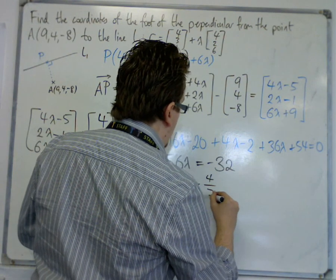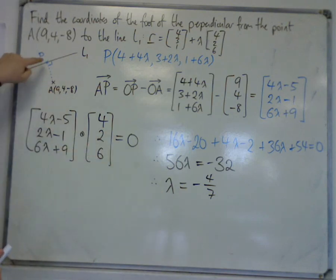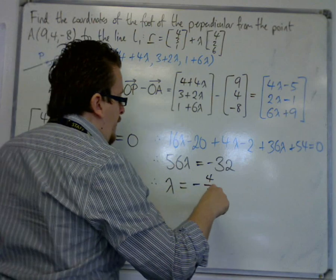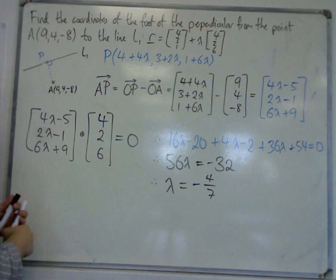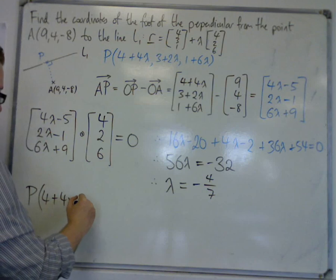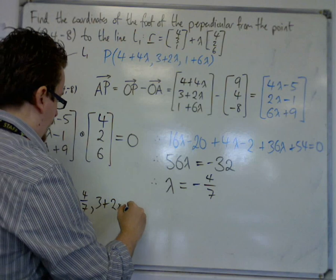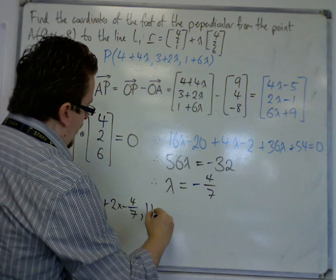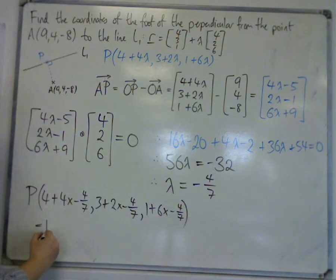So that is the specific value of lambda such that A to P is the shortest distance from the point to the line. So if I substitute minus 4 sevenths into my coordinates for P, then I get 4 plus 4 lots of minus 4 sevenths, 3 plus 2 lots of minus 4 sevenths, and 1 plus 6 lots of minus 4 sevenths.